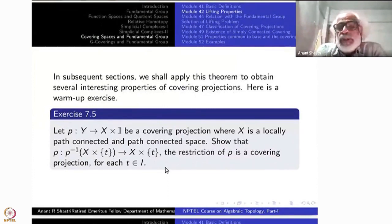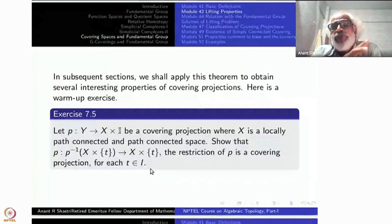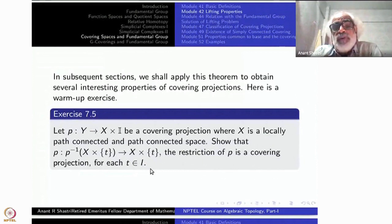Take a covering projection over the space X cross I. Where X is locally path connected etc. You have to assume. And you can assume path connectivity also. This is if you look at, restrict P inverse of X cross t at each level. Take P inverse of X cross t to X cross t. This restriction map is a covering projection for each t. This is what you have to show. Remember if you take arbitrary subsets the inverse image, full inverse image, then that will be a covering projection. So this is not a very difficult thing to prove.